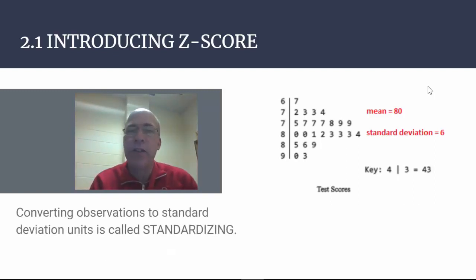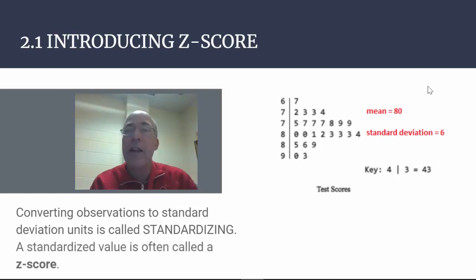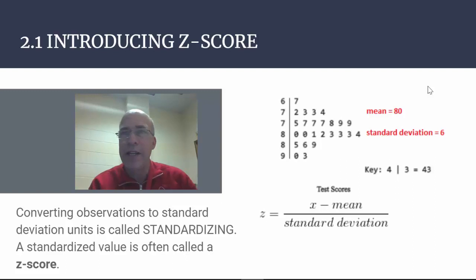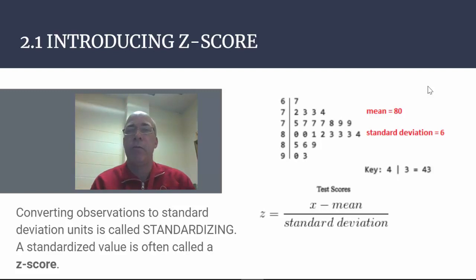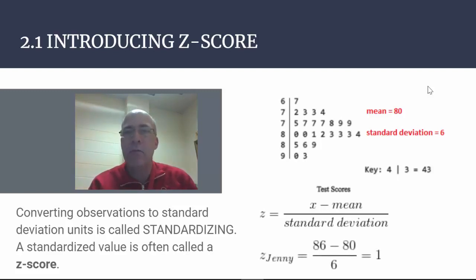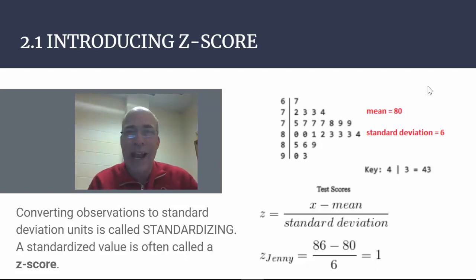Converting observations to standard deviation units is called standardizing — something we will do often throughout the course. A standardized value is often called a z-score, and the formula is easy to remember: it's your score minus the mean, divided by the standard deviation. For Jenny, we take her score of 86, subtract 80, and divide by 6, giving Jenny a z-score of 1.